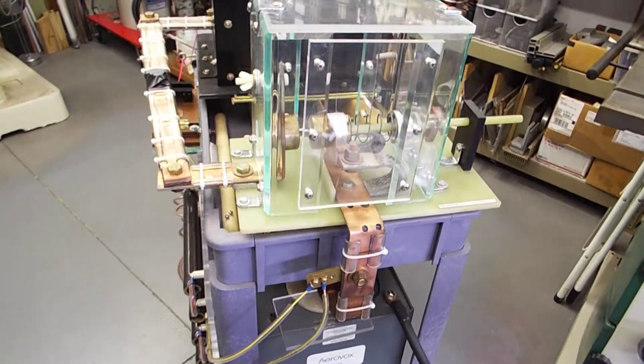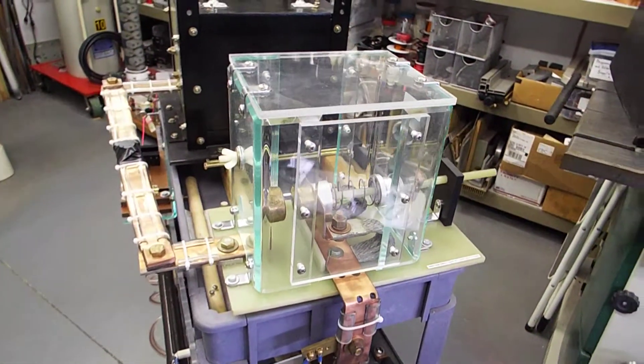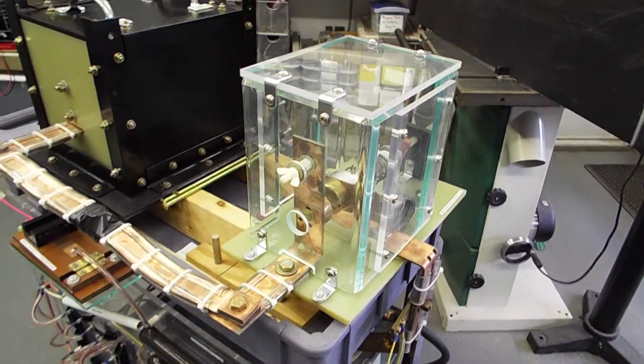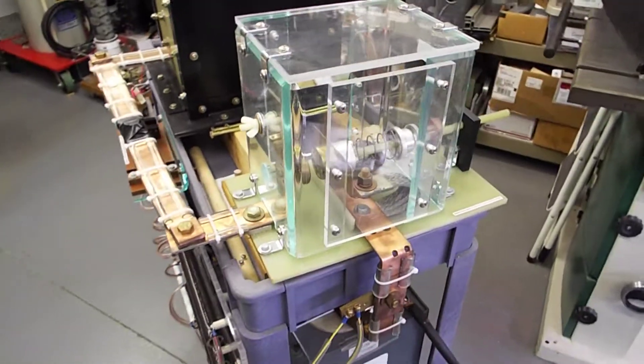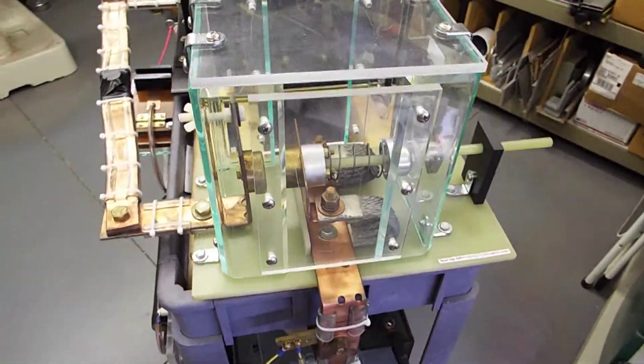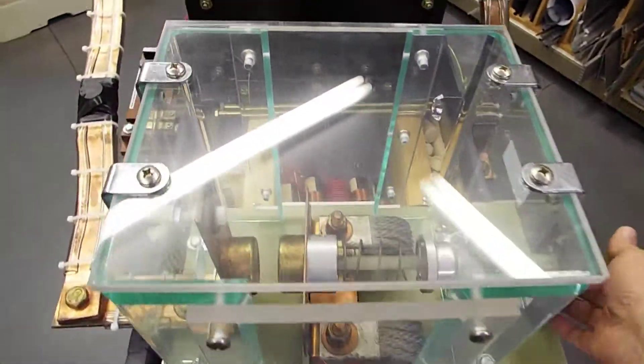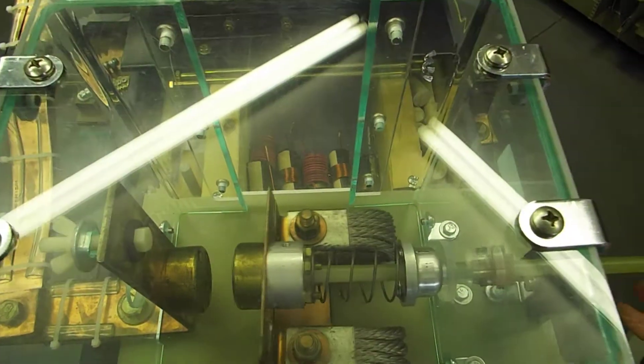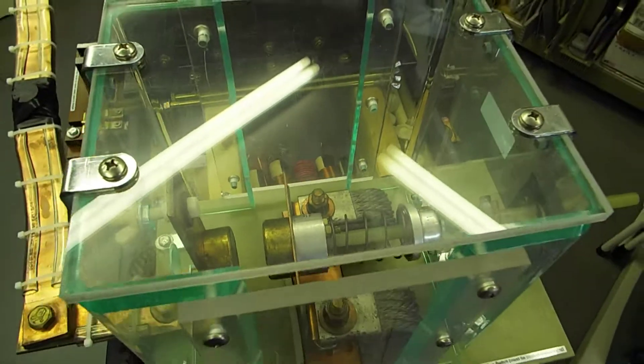Moving up, this is the spark gap switch. It's all manual. It's spring-loaded. There's no electronics involved. Essentially I can cock it by pulling this back and latching it. Then when I release it, it slams into there.